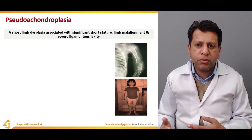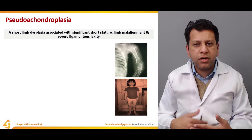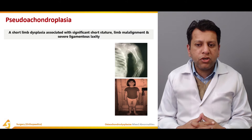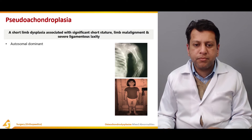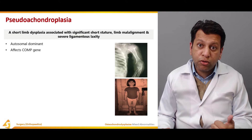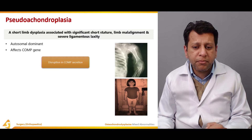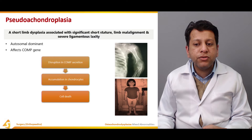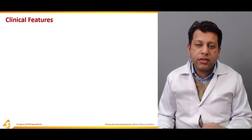Coming to pseudoachondroplasia: it is called pseudoachondroplasia because it mimics achondroplasia but does not specifically affect the physis; it can affect other regions as well. It is a short limb dysplasia associated with significant short stature, limb malalignment, and severe ligamentous laxity. It is autosomal dominant like achondroplasia, but affects the COMP gene like multiple epiphyseal dysplasia. There is disruption in COMP secretion, accumulation in chondrocytes, and eventually cell death, leading to inhibition of epiphyseal growth and short stature.